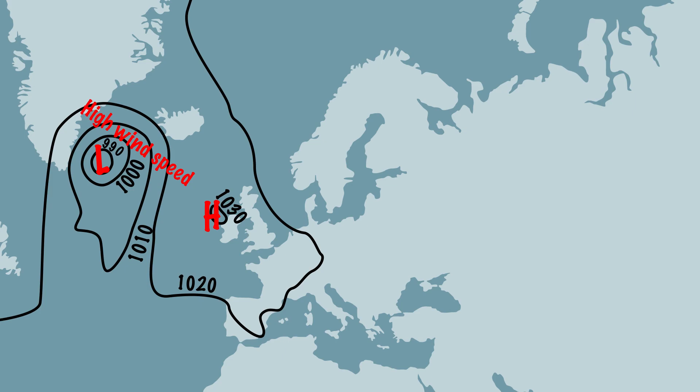At the high pressure area there are few isobars to be seen, so there is little difference in air pressure and the wind speed will be low. By working with isobars you can easily find low and high pressure areas, but you can also easily see where the wind will be strongest.